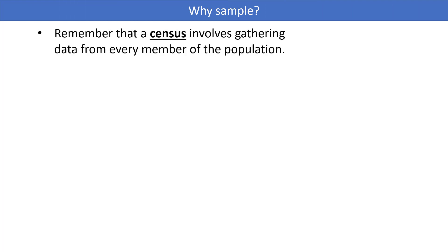Let's first talk about why we even sample in the first place. You may remember the distinction between a sample and a census. A census is when you gather data from every single member of your population of interest. You as a researcher are going to determine what your population is — the group of all individuals you would like to study. Your population might be all adults of a certain age, a certain type of animal, or students in a school.